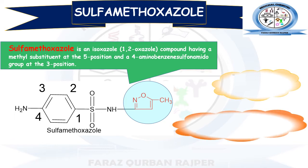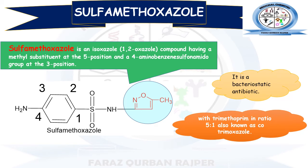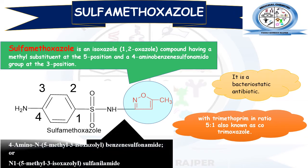Sulphamethoxazole is the methyl derivative of isoxazole, and it is a bacteriostatic antibiotic — meaning it does not have bactericidal action, only bacteriostatic activity. However, it can be useful in combination therapy; it can be combined with trimethoprim in a 5:1 ratio to form the combination formulation cotrimoxazole. In cotrimoxazole, the overall action of the combination becomes bactericidal, whereas individually, Sulphamethoxazole has only bacteriostatic action.